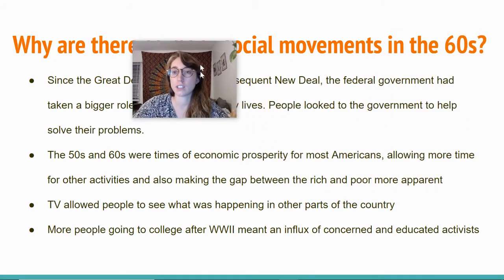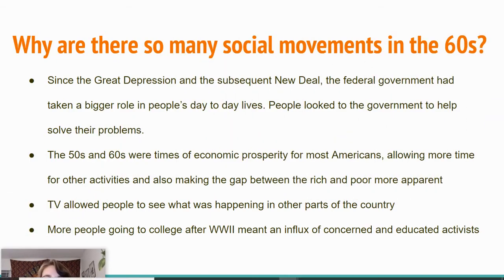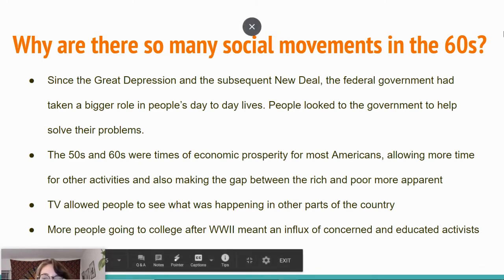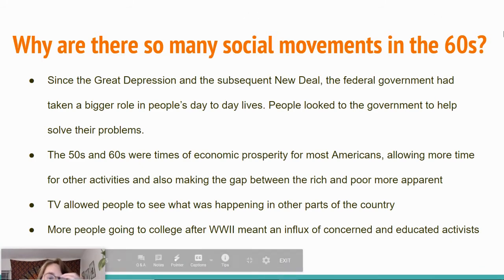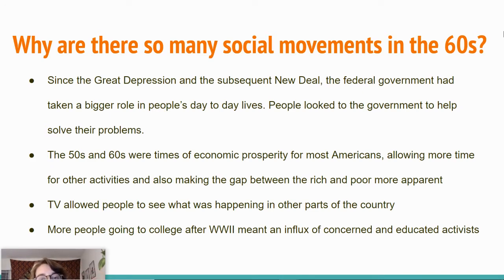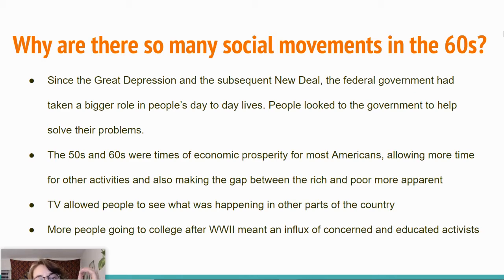There are a ton of different reasons why there are so many social movements in the 60s — four main reasons in general. First, since the Great Depression and the subsequent New Deal, the federal government had taken a bigger role in people's day-to-day lives, so people were looking to the government to help solve their problems. People who were starting social movements were trying to get the government's attention so that they could get laws passed for a more equal society.